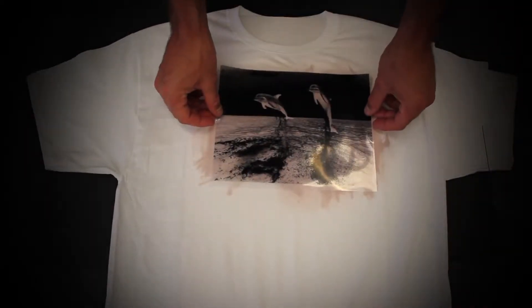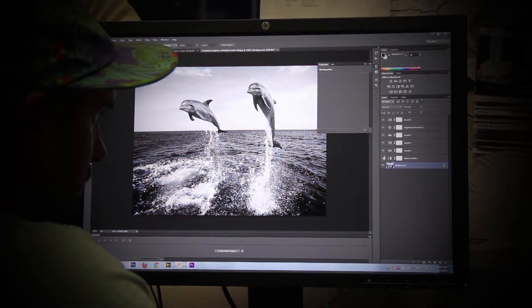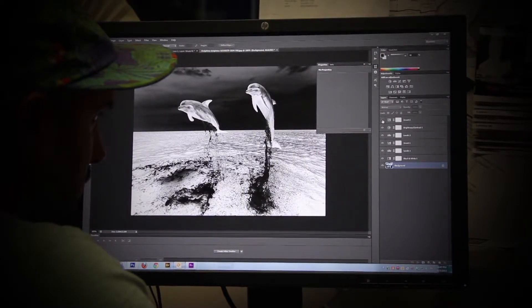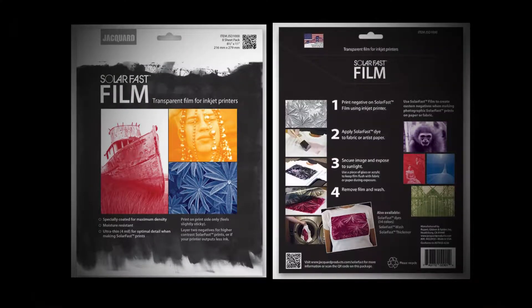Next, place your film negative. Photographs should be black and white, inverted, and printed on Solar Fast Film through an inkjet printer.